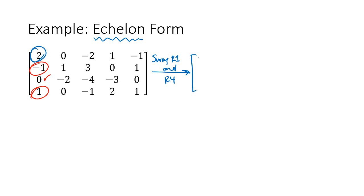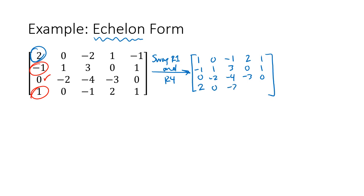My new row 1 is 1, 0, −1, 2, 1. I didn't change rows 2 or 3, so row 2 is still −1, 1, 3, 0, 1 and row 3 is 0, −2, −4, −3, 0. My new row 4 is my old row 1: 2, 0, −2, 1, −1.